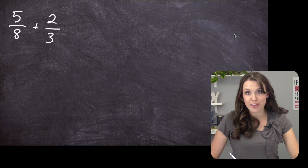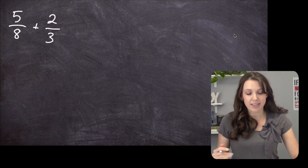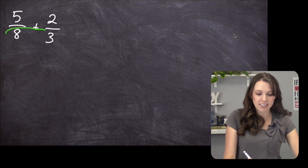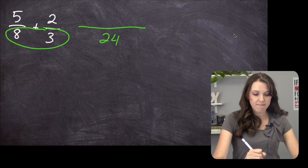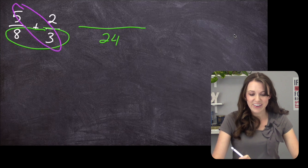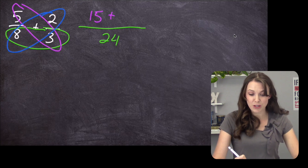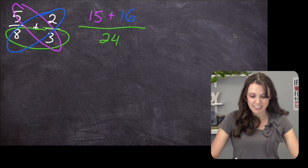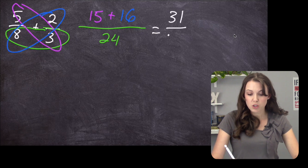Five eighths plus two thirds. The first thing we have to do is make sure the number on the bottom — the denominator — is the same. So we go eight times three, which is 24. Now we take five times three, which is 15, plus eight times two, which is 16. So 15 plus 16 is 31 over 24.